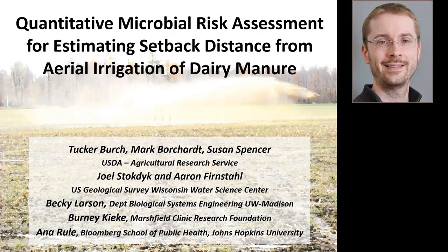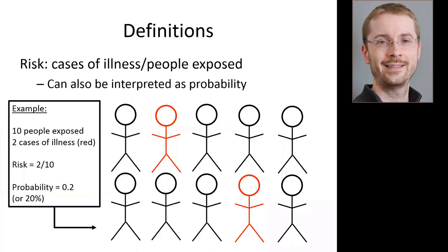I'll start by explaining what I mean by risk, and then explain what quantitative microbial risk assessment is. When I say risk, I usually mean something fairly specific and quantitative. I like to think of it as cases of illness per people exposed. So if we have 10 people exposed to manure irrigation and two get sick, the risk is two illnesses per people exposed — you can also interpret that as a 20% probability of becoming ill.